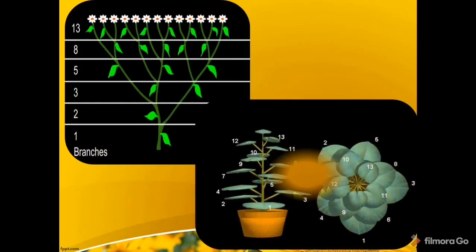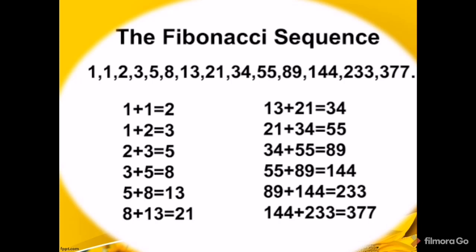The number patterns behind the number of petals and the arrangement of leaves on a stem is called the Fibonacci sequence. The numbers are 1, 1, 2, 3, 5, 8, 13, and so on — a sequence in which each number is the sum of the two preceding numbers. So: 1+1=2, 1+2=3, 2+3=5, 3+5=8, 5+8=13, and 8+13=21.